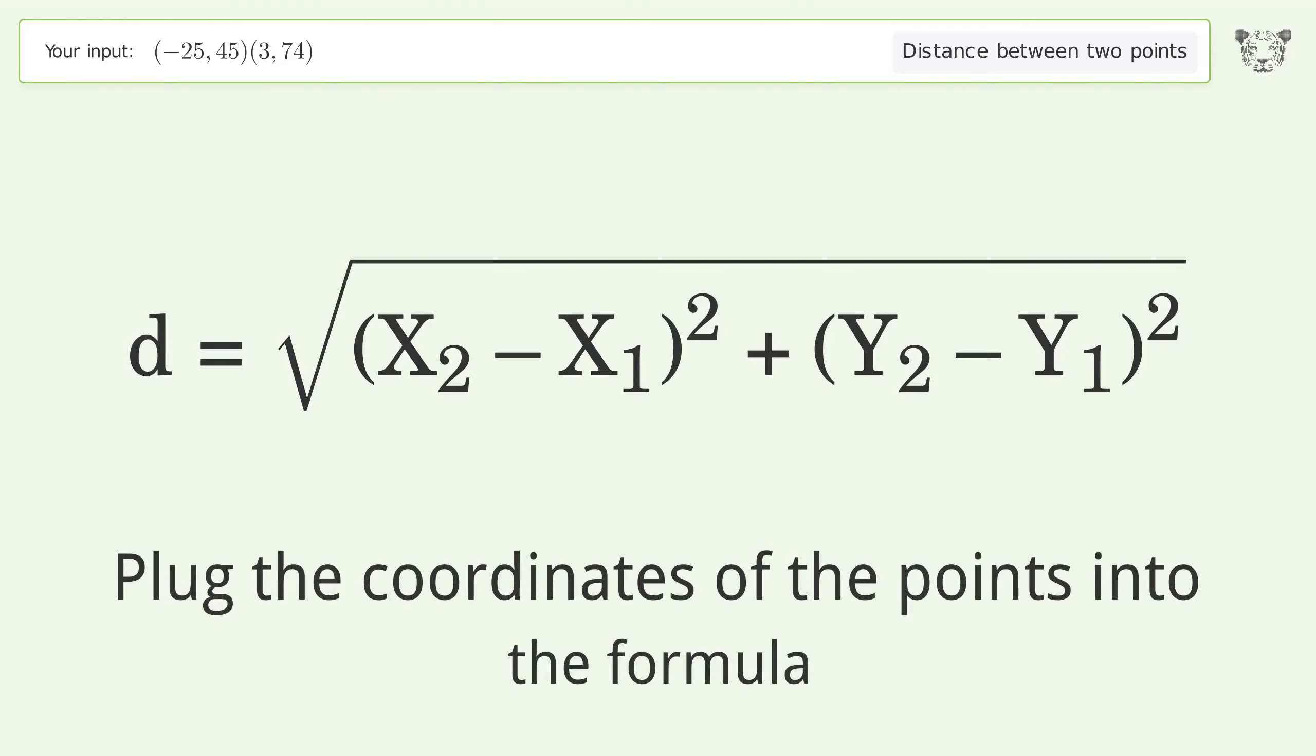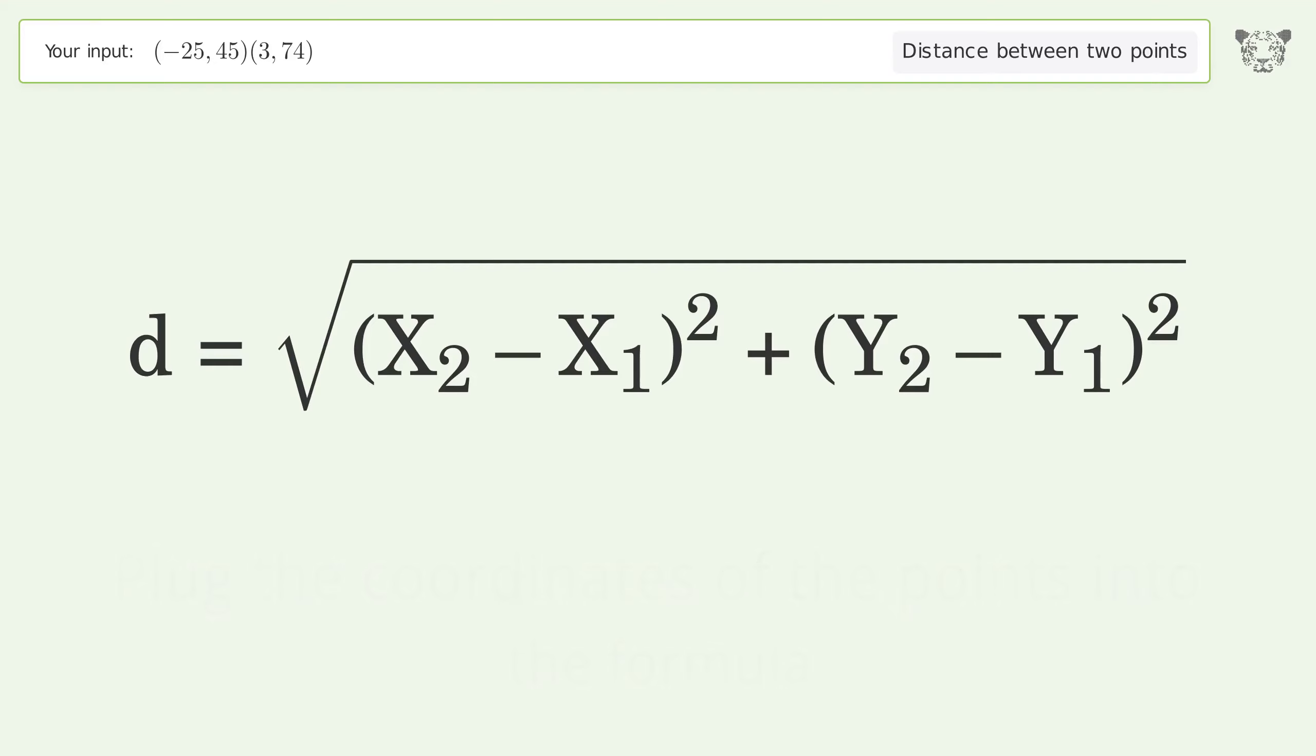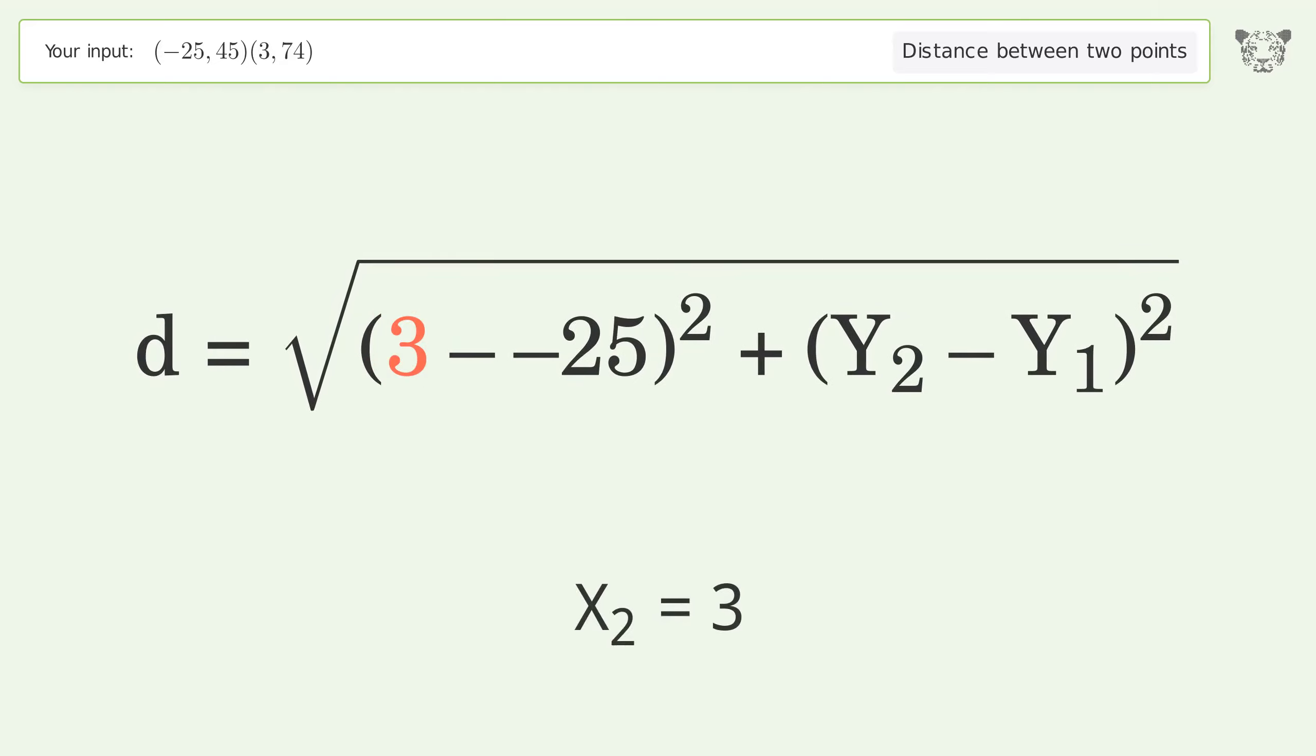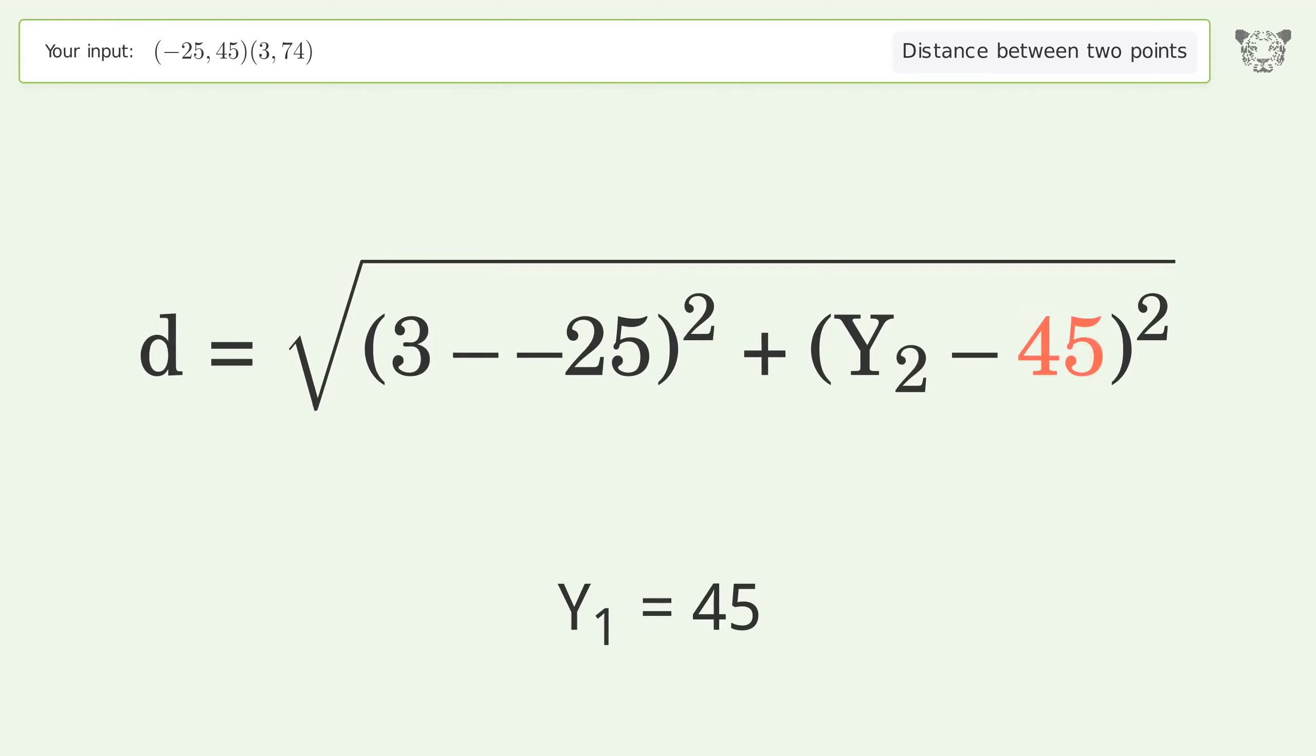Plug the coordinates of the points into the formula. x1 equals negative 25, x2 equals 3, y1 equals 45, y2 equals 74.